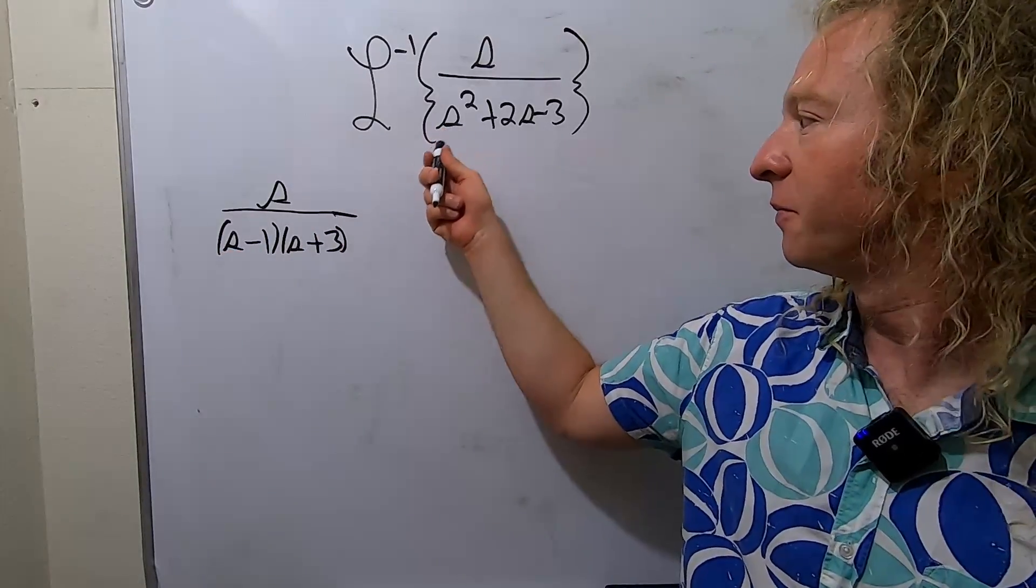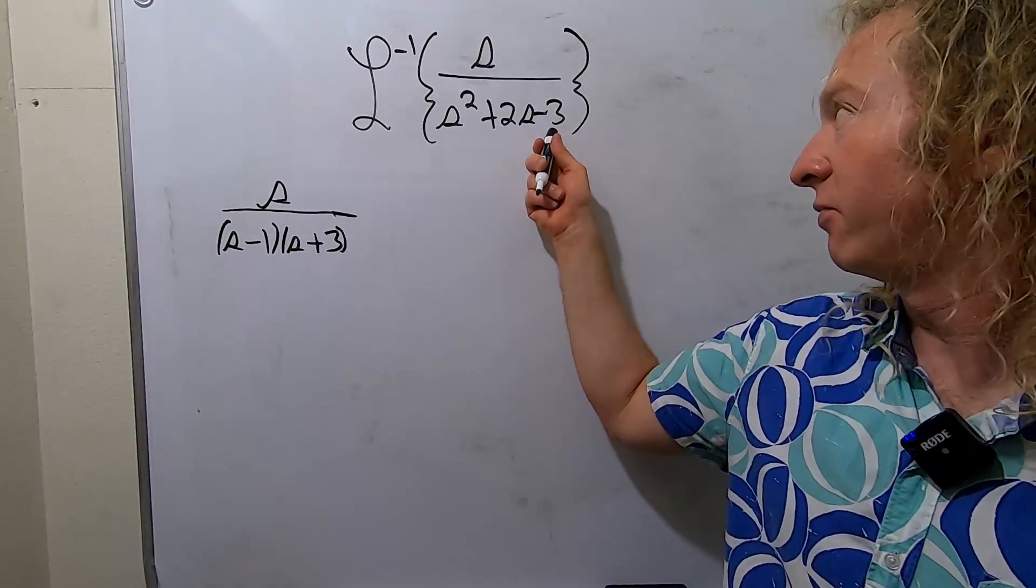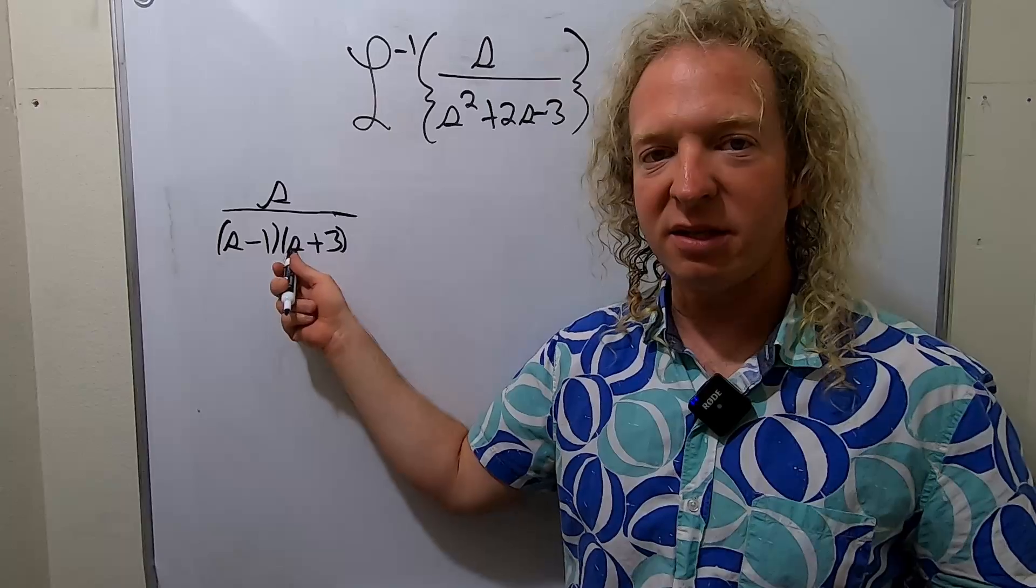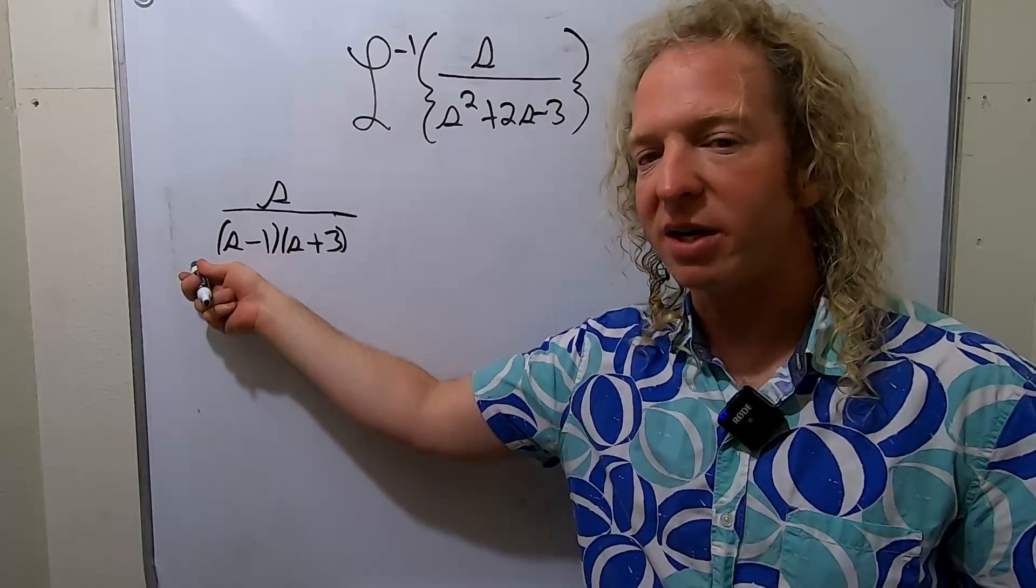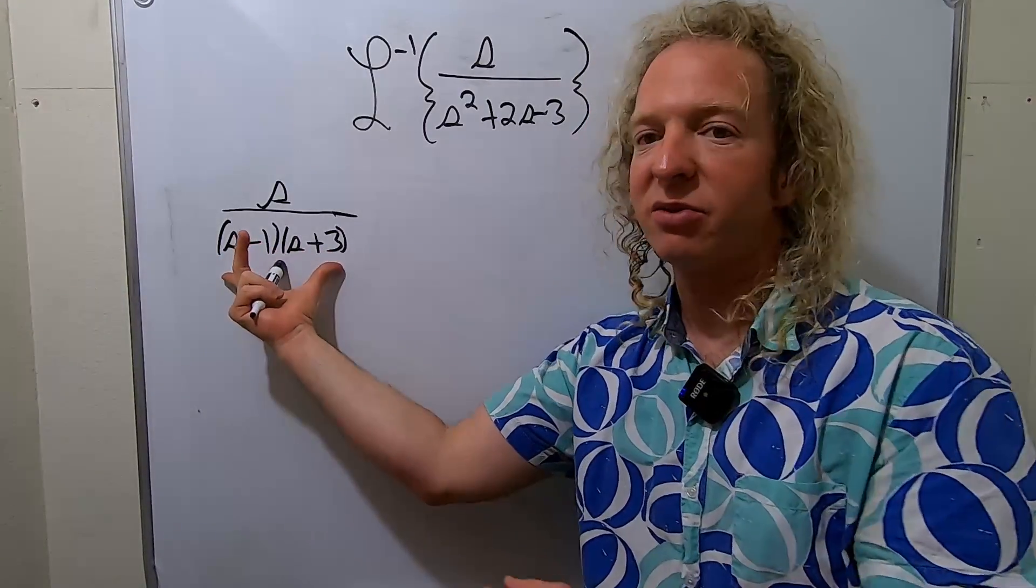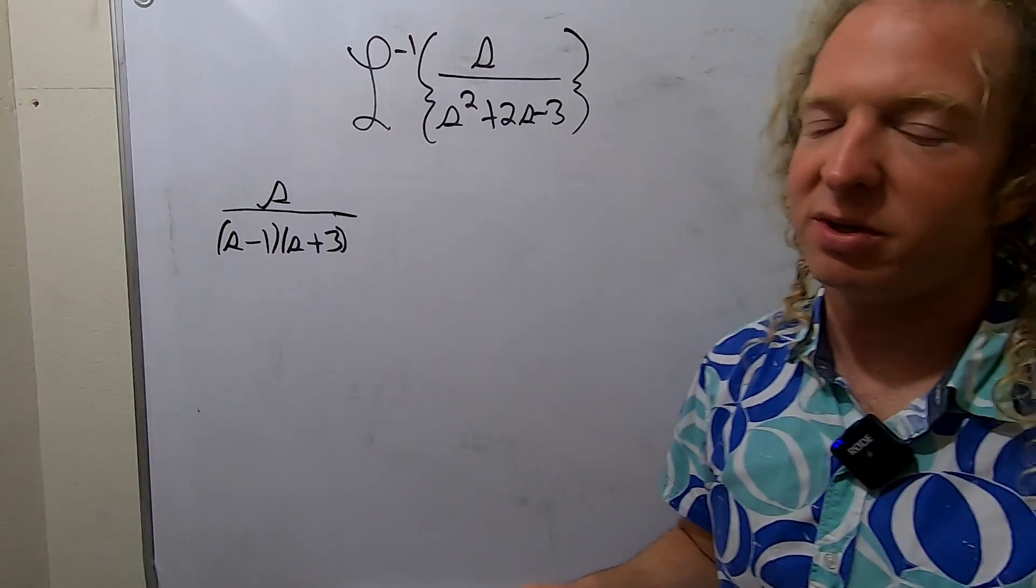So S times S is S squared. Negative 1 times 3 is negative 3. The inside piece is negative S. The outside piece is 3S. Negative S plus 3S is 2S. So it does indeed factor.